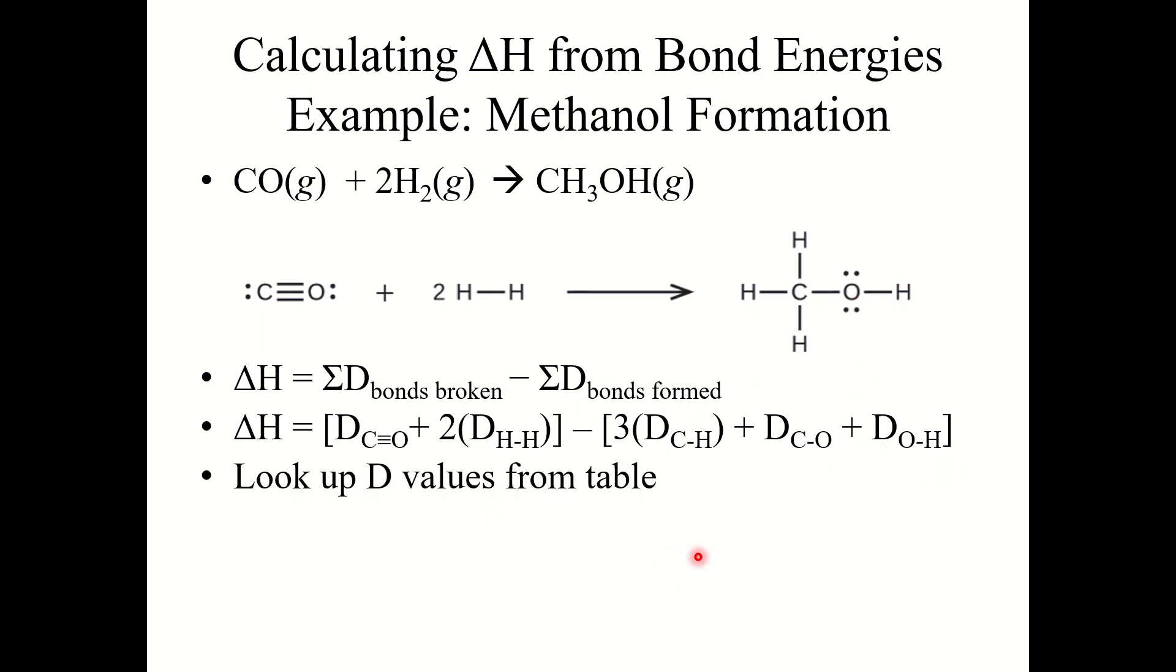Three carbon to hydrogen bonds, one carbon to oxygen single bond, and one oxygen to hydrogen bond. You would look up these values from the table. 1080, this bond has a bond energy of 1080 kilojoules. 2 times 436, minus 3 times 415, plus 350, plus 454. You get negative 107 kilojoules. This reaction has a delta H of negative 107 kilojoules.